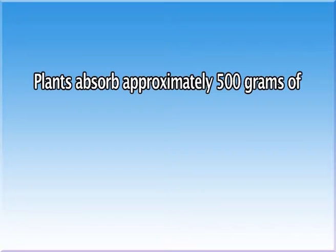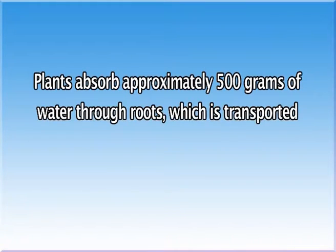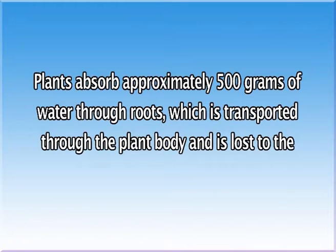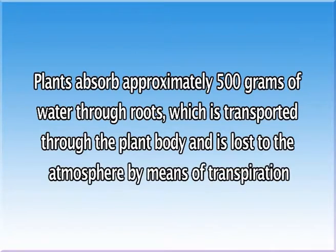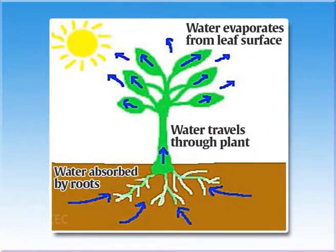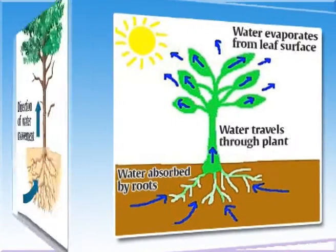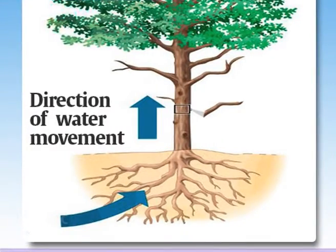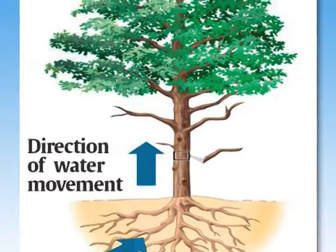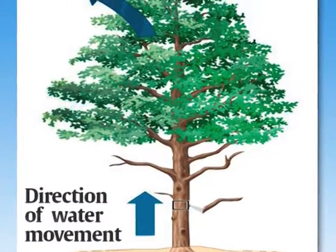Water plays an important role in plant life because it provides the medium for most of the biochemical processes in the plant body. For making one gram of organic matter, plants absorb approximately 500 grams of water through roots, which is transported through the plant body and is lost to the atmosphere by means of transpiration. Water taken by the roots contains dissolved minerals and is hence called sap.